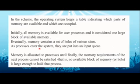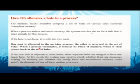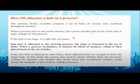Now let's look at how the OS allocates a hole to a process. The memory blocks available comprise a set of holes of various sizes scattered throughout memory. Whenever a process arrives and needs memory, the system searches for a hole large enough for that process. If the hole is too large, it is split into two parts — one part is allocated to the arriving process and the other is returned to the set of holes. When a process terminates, it releases its block of memory, which is placed back in the set of holes.